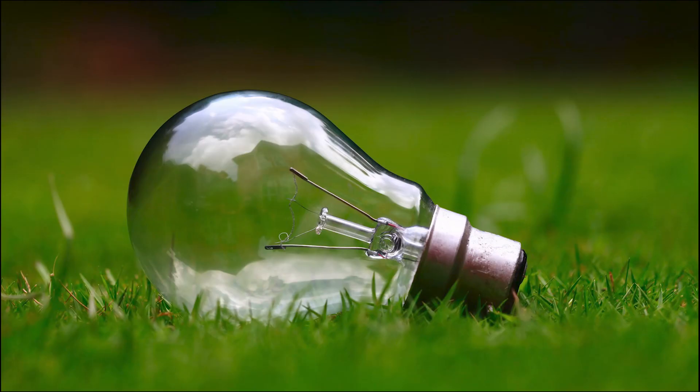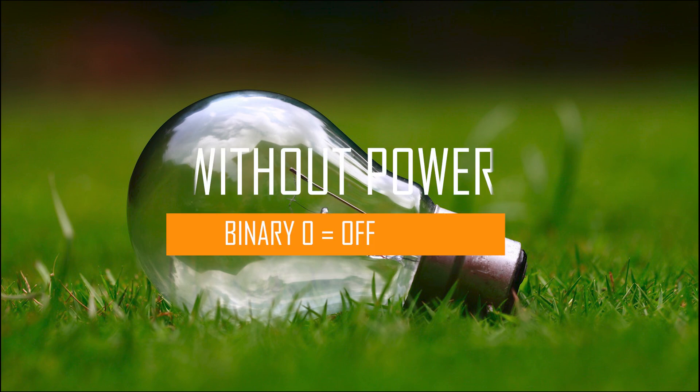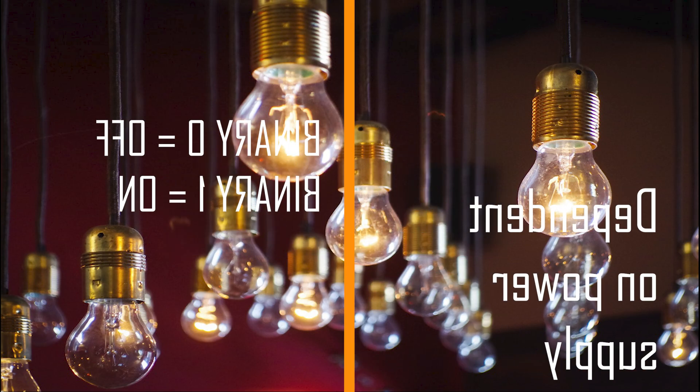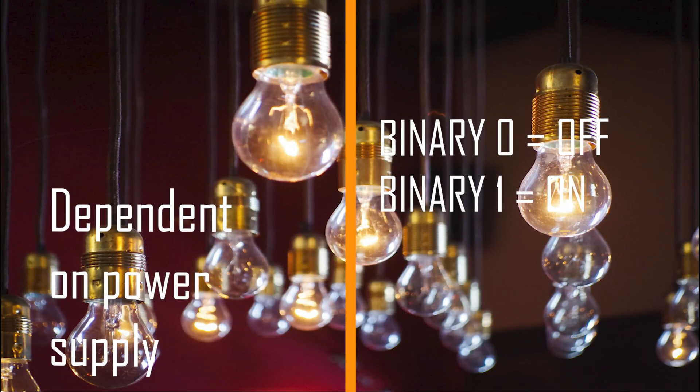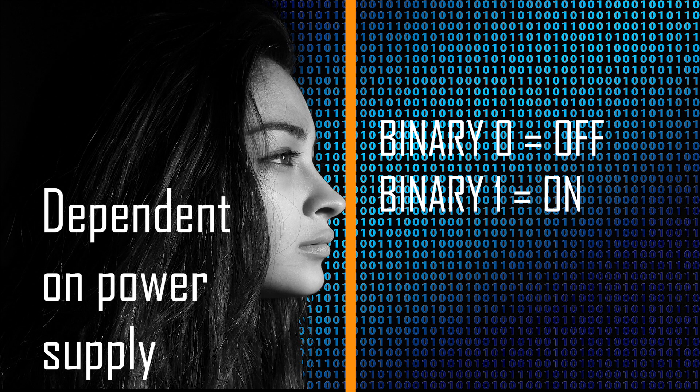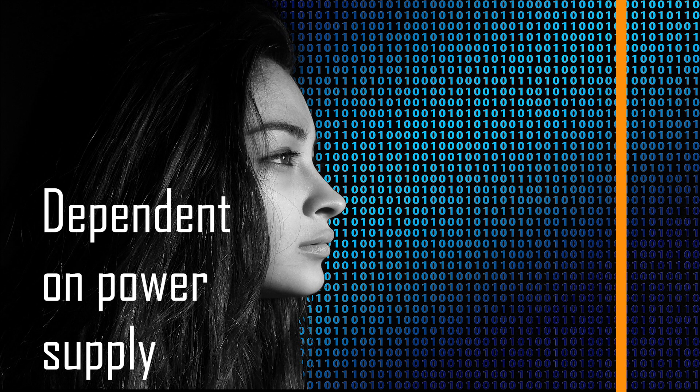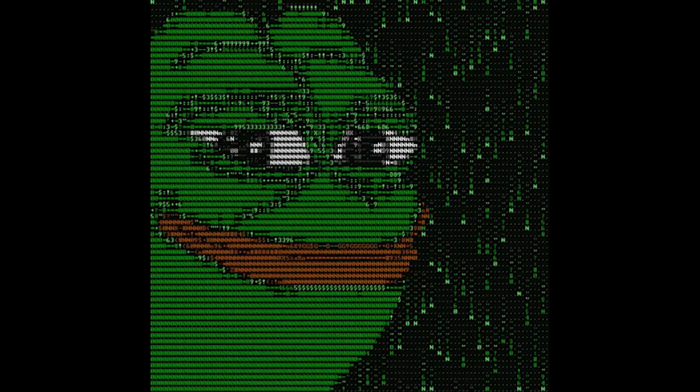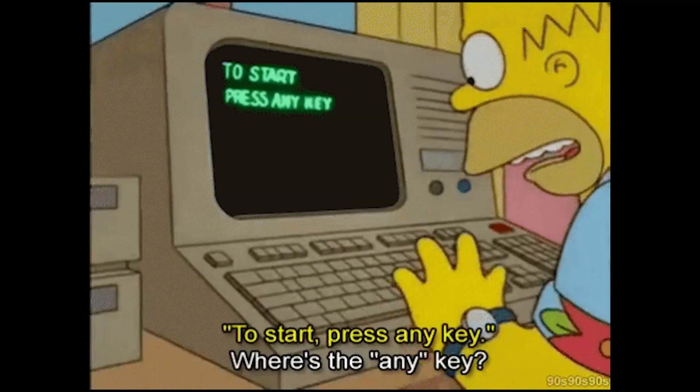These transistors function with electricity. Quite simply, without power they remain off. With power, they switch on. This is how computers function. A series of transistors consisting of on and off switches represented by zeros and ones. Well, that's enough binary for now. We'll look at that in a later video.